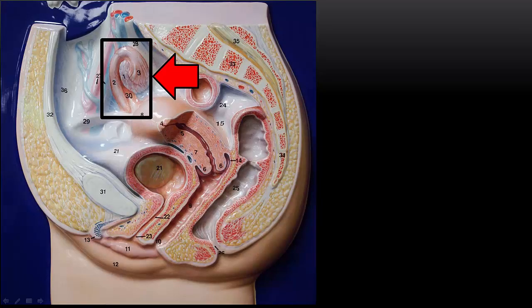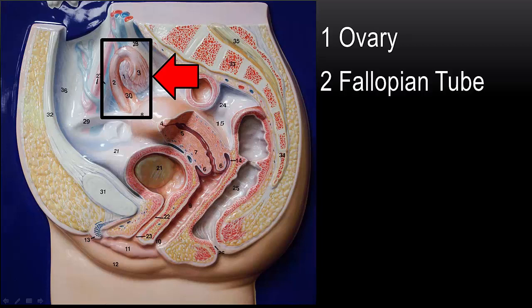We'll start with this board to show the organs. Here we see the ovary, number one; the fallopian tube, number two; and at the end of the fallopian tube, the fimbriae, number three.